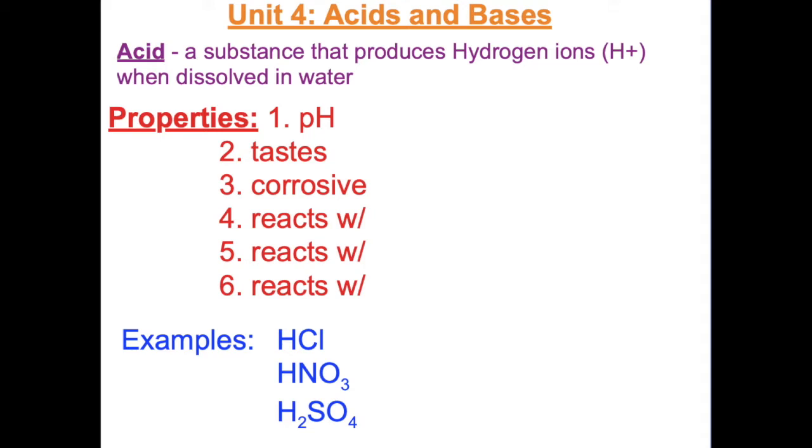Substances can be described and identified by their physical and chemical properties. One way to describe a substance is either as an acid, a base, or neutral.